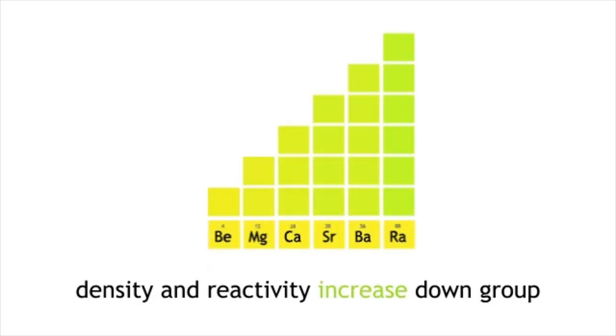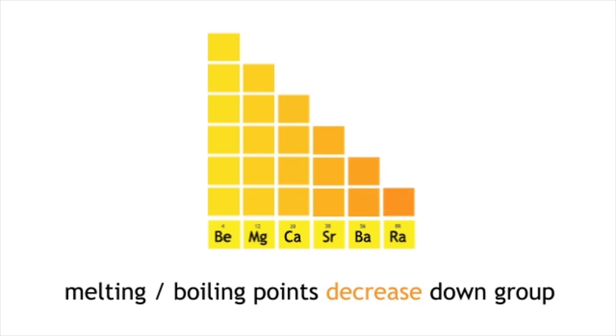Melting points and boiling points decrease and the metals become softer. We will now learn about the reactions of magnesium and calcium with oxygen and water. Magnesium is shiny and silver but you will see that your magnesium strip may be dull.